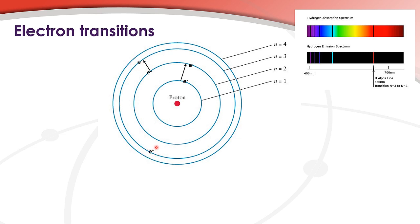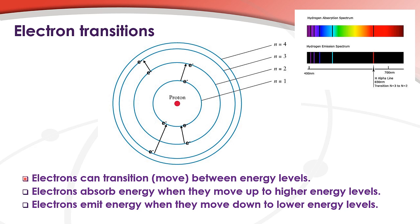Here we have an electron in the n equals 3 energy level. If this electron emits or gives off an exact amount of energy, it can transition down to the n equals 1 energy level. Here we have an electron in the n equals 2 energy level. If this electron emits an exact amount of energy, it can transition down to the n equals 1 energy level. So electrons can transition or move between the energy levels in an atom, depending on whether they absorb energy or emit energy. Electrons absorb energy when they move up to higher energy levels. Electrons emit energy when they move down to lower energy levels.